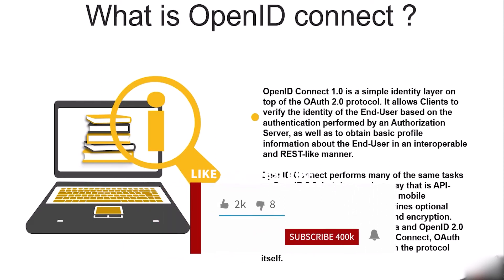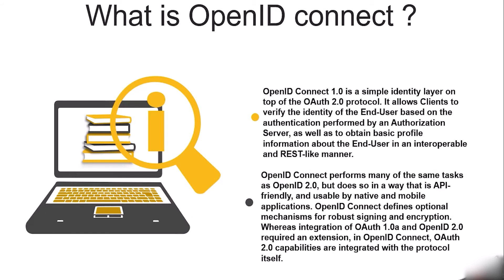OpenID Connect 1.0 is a simple identity layer on top of the OAuth 2.0 protocol. It allows clients to verify the identity of the end user based on authentication performed by an authorization server, and to obtain basic profile information in an interoperable manner. It is API-friendly and works with native and mobile applications. It defines optional mechanisms for robust signing and encryption, with OAuth 2.0 capabilities integrated into the protocol itself. OpenID Connect operates at the authentication layer.